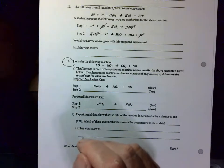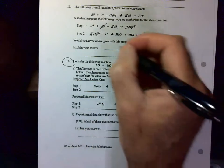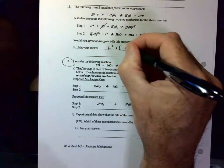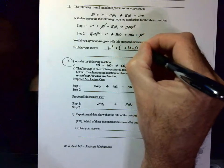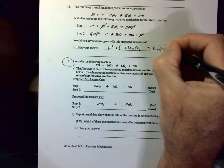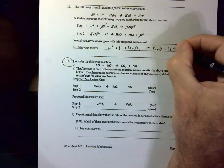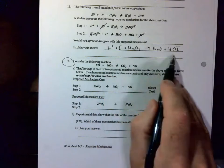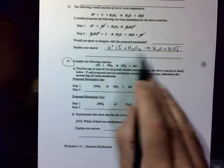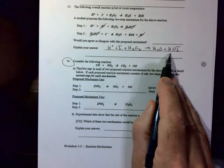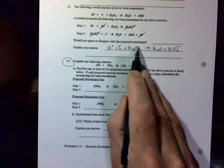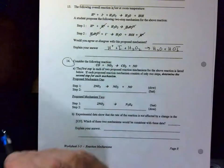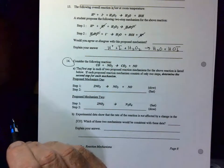Now what you want to do is you want to write your overall reaction out. Make sure that it's balanced. One I, one I, three H's, two H's there, one H there, two O's, two O's. So would you agree or disagree with this proposed mechanism?